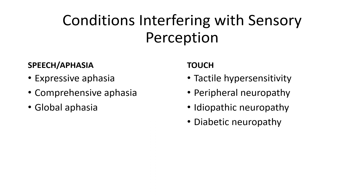Tactile hypersensitivity involves the peripheral or central nervous system being overly sensitive to sensory input, specifically tactile stimuli. An individual may not feel extremes in temperature or may have a limited ability to feel pain from bone fractures or a laceration. Peripheral neuropathy often occurs following damage or malfunction of a peripheral nerve. Idiopathic neuropathy is due to nerve damage that has no underlying cause. Diabetic neuropathy is due to diabetes mellitus and occurs over time from high blood glucose levels and high levels of triglycerides in the blood.